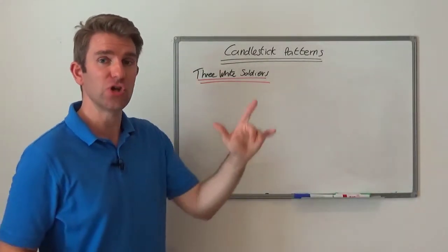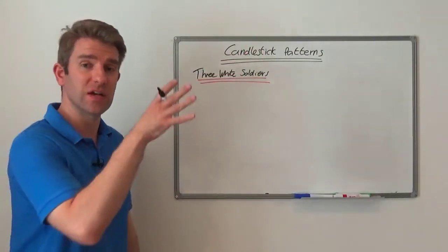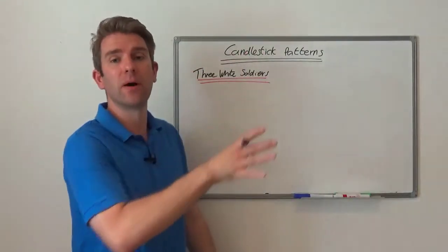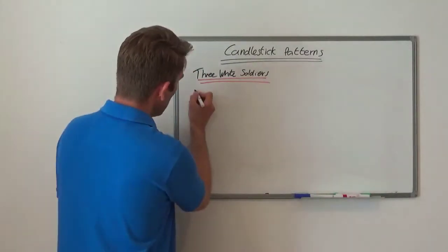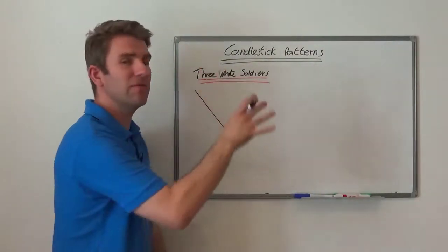This is completely the same but opposite. Let's have a look at the candlesticks and let's look at how it works. So we've got a downtrend here, and at the end of the downtrend we see these three candles.